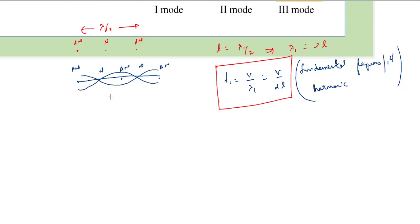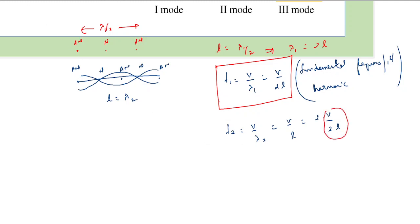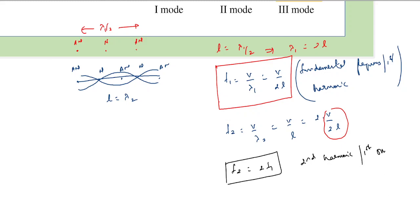In this case, the length of the tube contains a complete wavelength. The frequency in this case would be v divided by lambda 2, which is v divided by L. We can write this as 2v divided by 2L, which equals 2 times the fundamental frequency. Therefore f2 equals 2 times f1, and this is called the second harmonic. This is similar to what we observed in the case of a stretched string fixed at both ends.